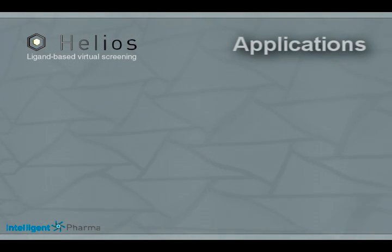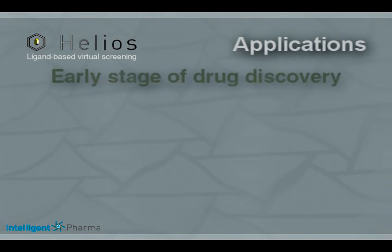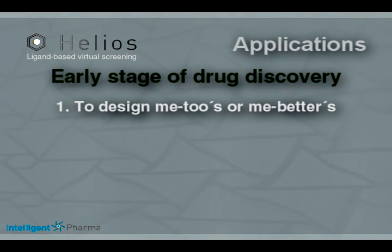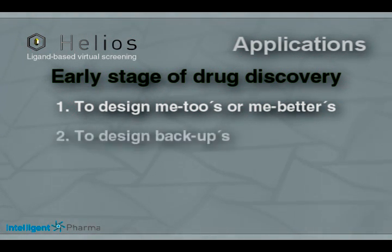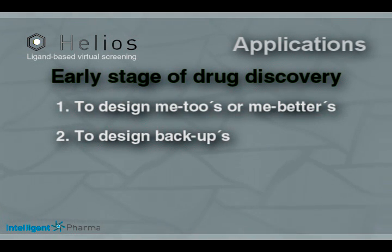As mentioned at the beginning, Helios has many applications in research directed towards drug discovery. In the early stage of drug discovery, to design me-toos or me-betters, Helios can find structurally different but biologically similar analogues amongst millions of molecules for a protected pharmacophore. To design backups: if your drug candidate is entering into preclinical trials, you can use Helios to identify other molecules which will serve as backups in case of failure.